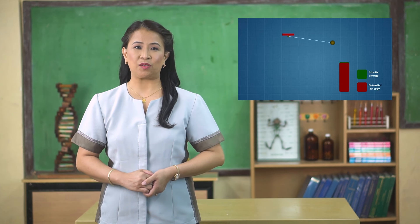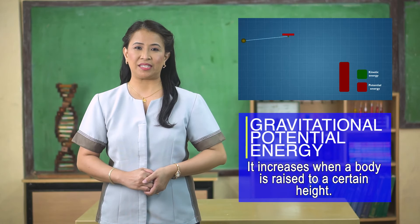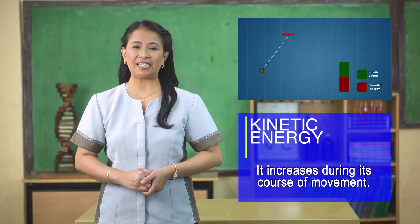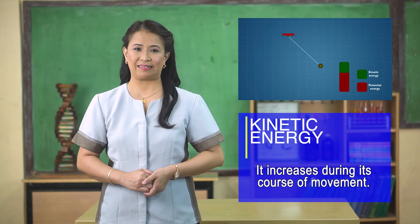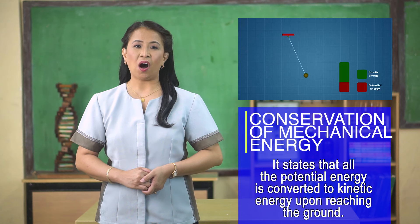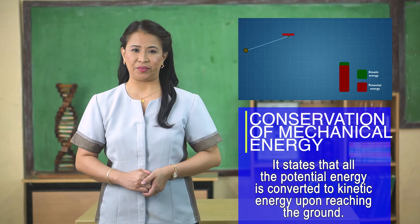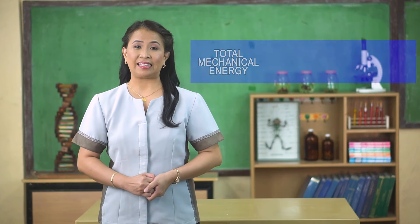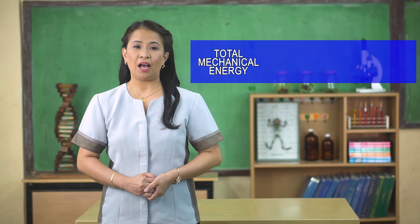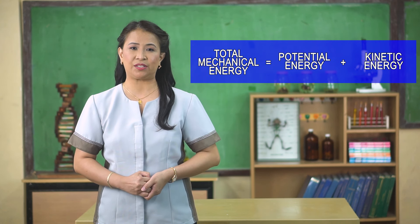Take note that when a body is raised to a certain height, the gravitational energy increases. And when it is released, the kinetic energy increases during its course of movement. Based on the conservation of energy, all the potential energy is converted to kinetic energy upon reaching the ground. Remember that the total mechanical energy of an object is equal to the sum of the potential energy and kinetic energy if friction is negligible.